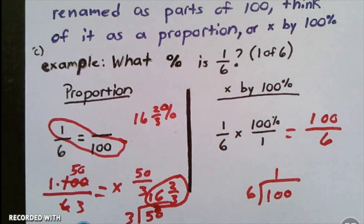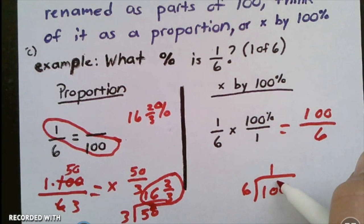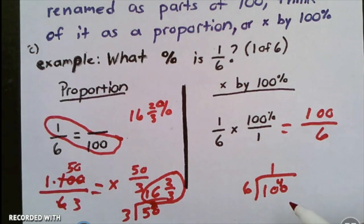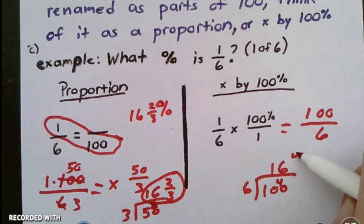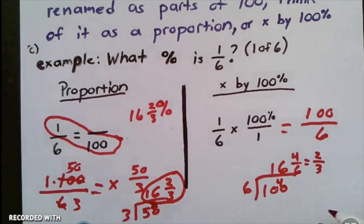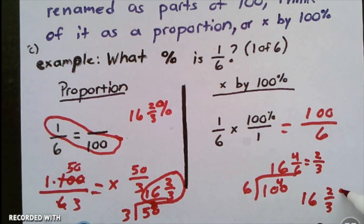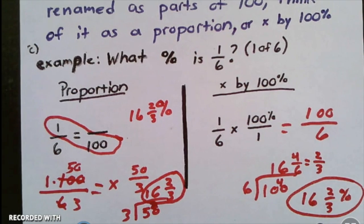100 divided by 6: 6 goes into 10 one time with 4 left over, so then 6 goes into 40 six times. Six times six is 36, 40 minus 36 is 4, so 16 and 4/6. That fraction reduces to two-thirds, so my answer is 16 and two-thirds percent. Hey, what do you know? I got the same answer no matter which way I did it.